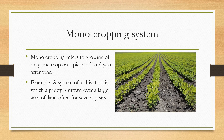Let us see about the monocropping system, where the cropping pattern involves one crop grown over the same land for several years — the crop remains the same and does not change. This is called the monocropping system. For example, paddy cultivation is grown over a large area of land, often for several years on the same piece of land, not mixed with other crops.